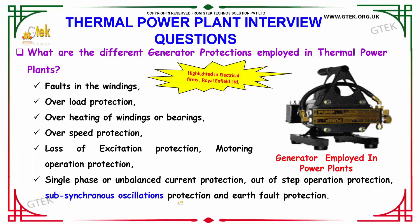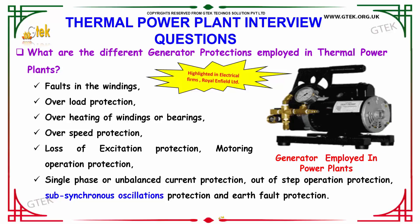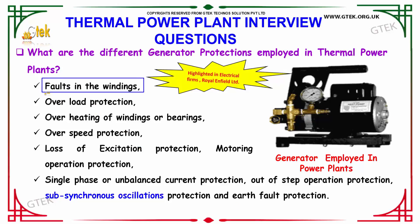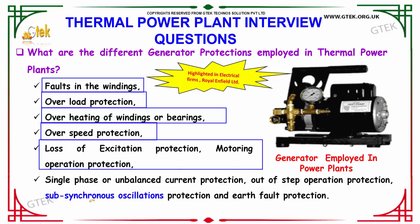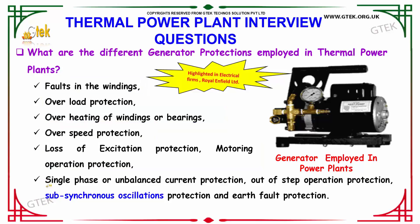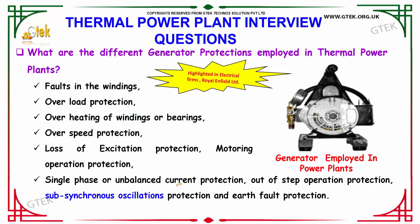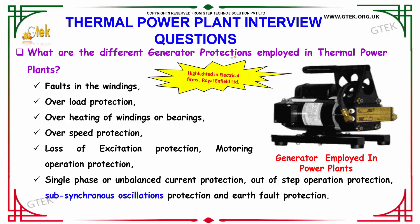What are the different generator protections employed in thermal power plants? The different generator protections are: faults in the windings, overload protection, overheating of windings or bearings, overspeed protection, loss of excitation protection, motoring operation protection, single phase or unbalanced current protection, out of step operation protection, sub-synchronous oscillation protection, and earth fault protection.